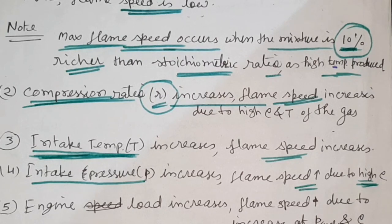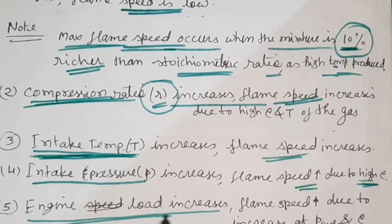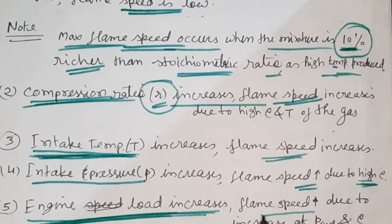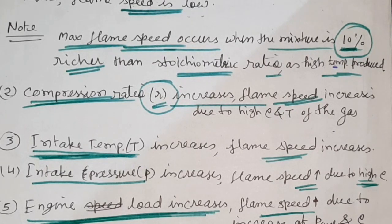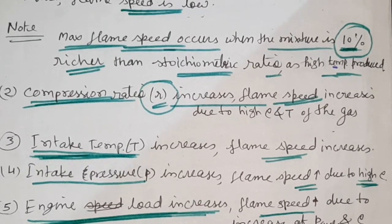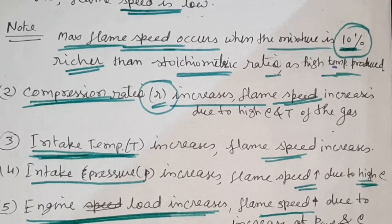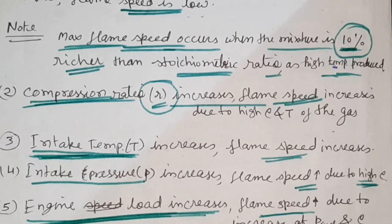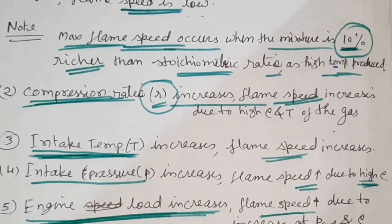The fifth factor is engine load. If engine load is increased, the flame speed will also be increased due to increase of cycle pressure and density. The next point is turbulence. If turbulence is increased, we get perfect mixing of air and fuel, so flame speed will be increased due to internal friction, heat transfer, and mixing of both burnt and unburnt portions of the flame front.